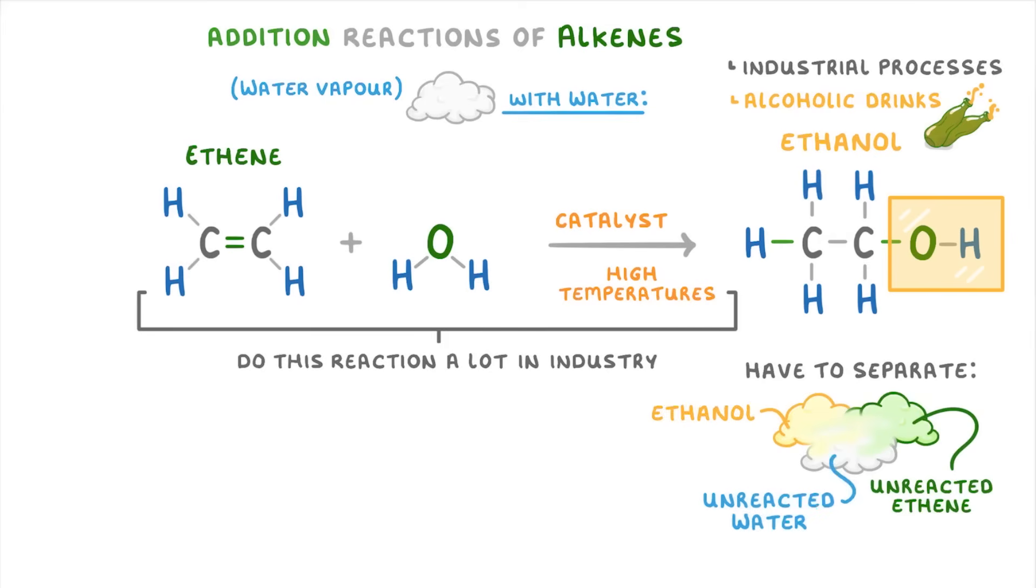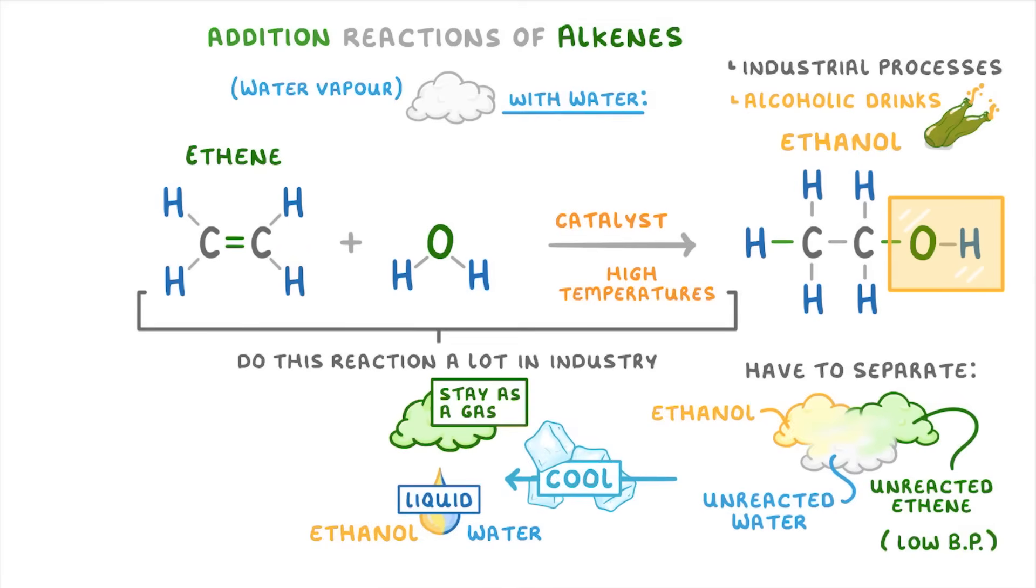The ethene is easy to separate because it has a relatively low boiling point. So if we cool down the mixture, the ethene will stay as a gas while the water and ethanol will condense into liquid form.